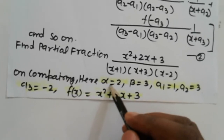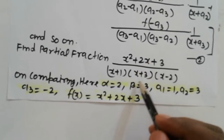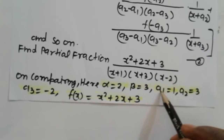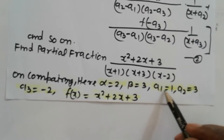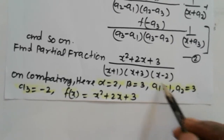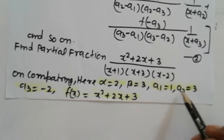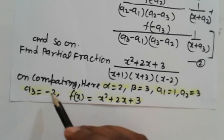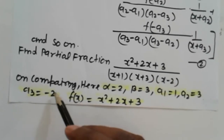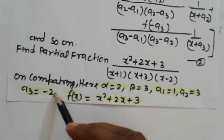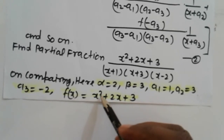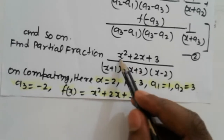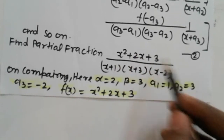The coefficient of x gives alpha, the constant term gives beta, and comparing the denominator factors: a1 is 1 from (x plus a1), a2 is 3 from (x plus a2), and a3 is minus 2 from (x plus a3). So f of x equals x squared plus 2x plus 3.